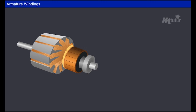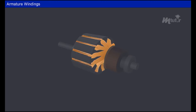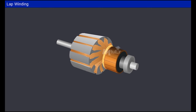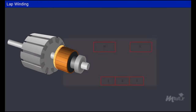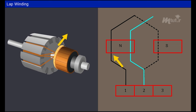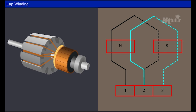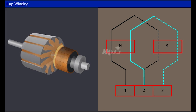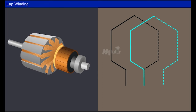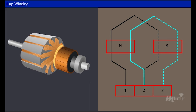The armature windings can be categorized into two types depending on their winding arrangement and connection to the commutator: lap winding and wave winding. In lap winding, the completing side or back end of a coil is connected to a commutator segment and to the start or front end side of the successive coil under the same pole pair. This process continues for the remaining coils. The coils overlap each other in this winding method, hence the name lap winding.